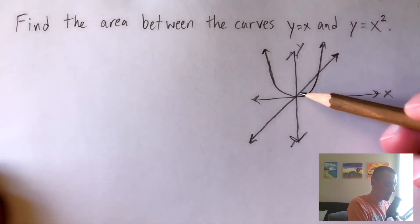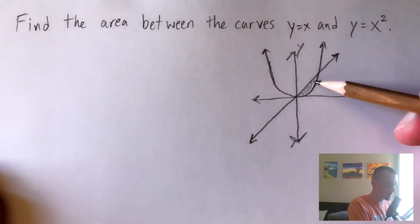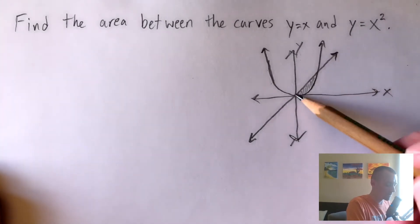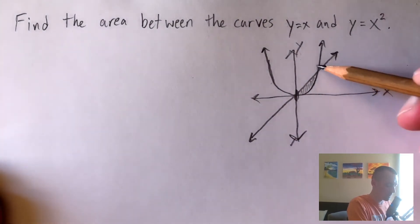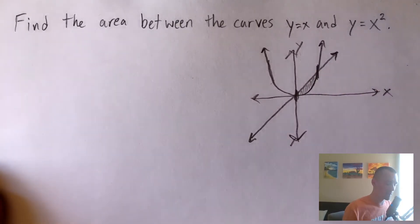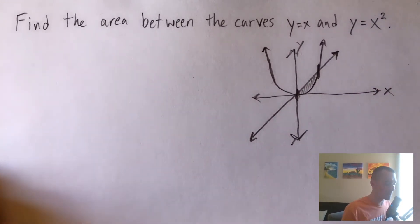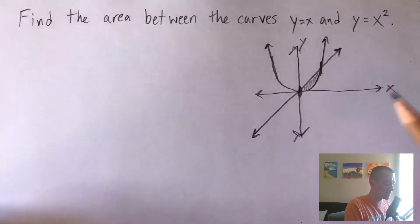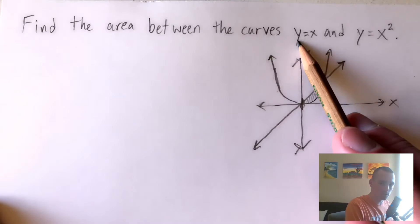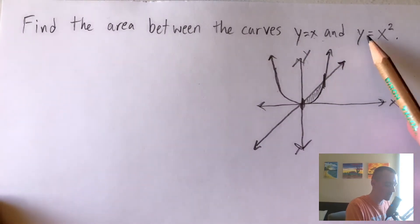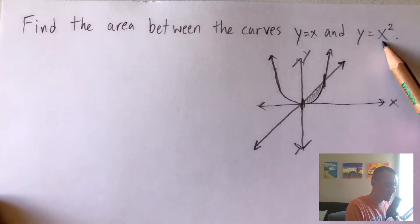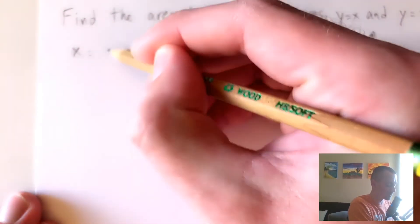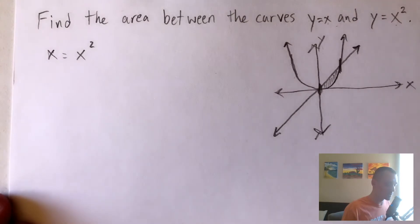y equals x squared is going to be a parabola with a vertex at the origin. From the quick sketch we can see that the area we're trying to find is right here between these two curves. So we need to figure out the edges of this area — where they intersect — so that we can set up our integral. To find where two functions intersect, since both are in the form y equals some function of x, we can set them equal to each other.